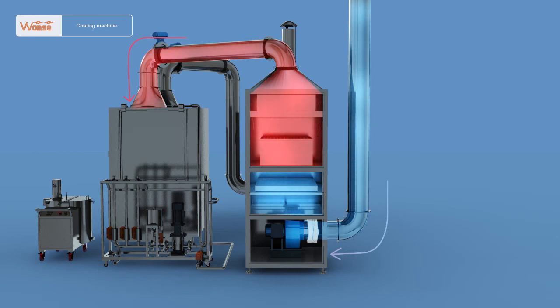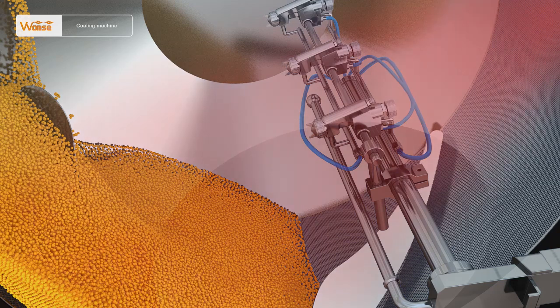After filtered by the high efficiency filter and meeting the requirements for class D clean air, the air will enter the coating drum in the main machine to carry out preheating and drying of the tablets or pills to be coated.